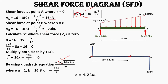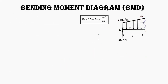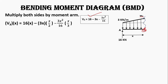We join 16 kN and −20 kN passing through the point where shear force is zero at x = 4.22 meters. Now let's derive the bending moment equation. Taking moments at distance x: RA contributes +16·x (clockwise), and the UDL of 3x contributes −3x·(x/2) (anticlockwise).